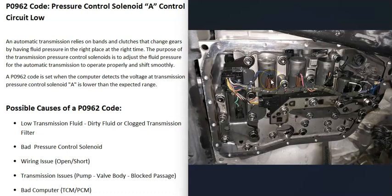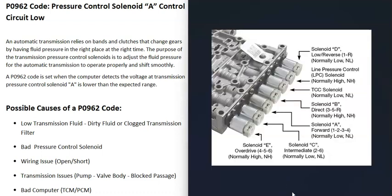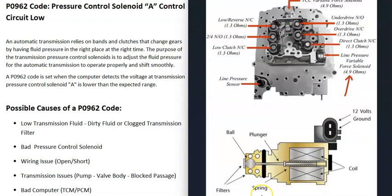The next thing that can cause this is a bad pressure control solenoid A or the wiring going to it. If you do go to work on your transmission, you'll need to get a diagram showing where all the solenoids are located, along with wiring schematics, because every transmission is going to be different in its layout. You locate solenoid A on that particular transmission, and once you find it, you can go and test it along with the wiring going to it.